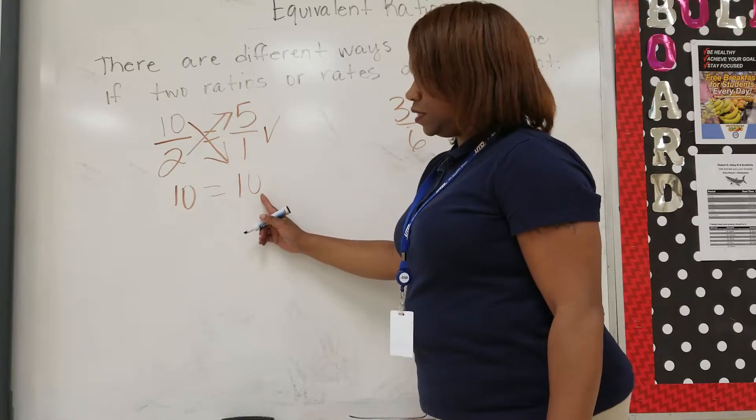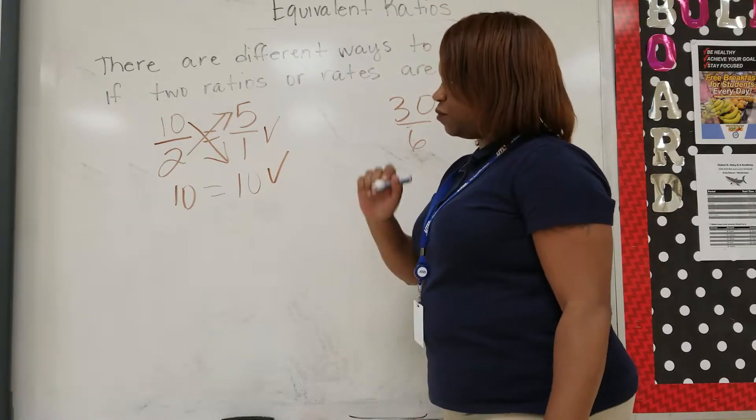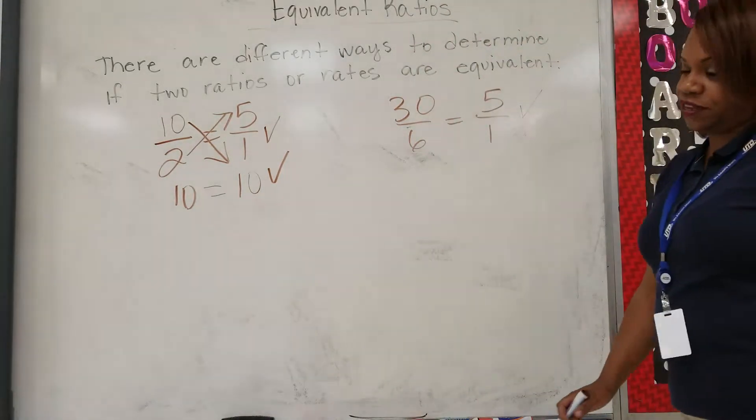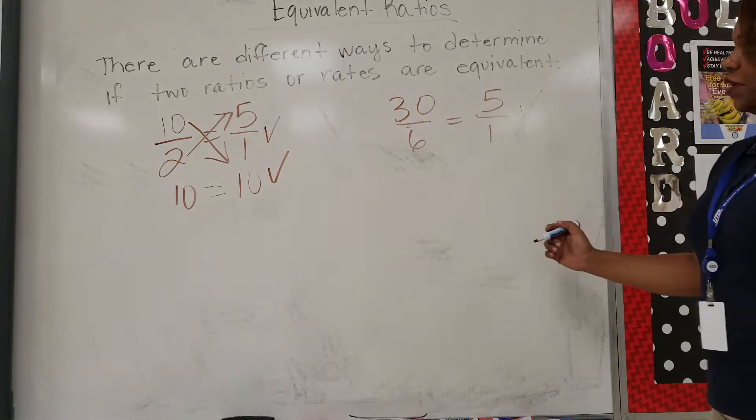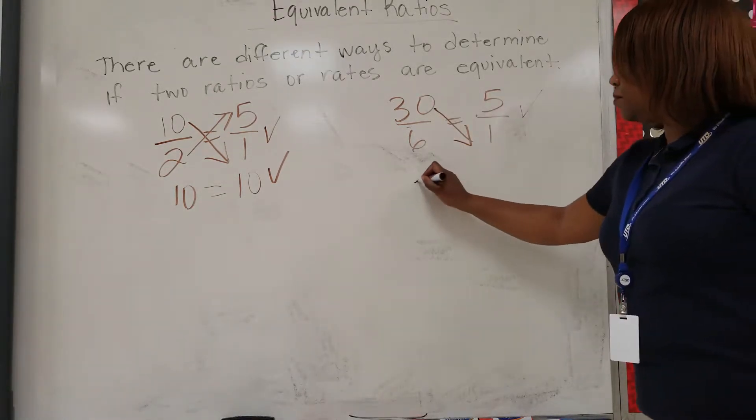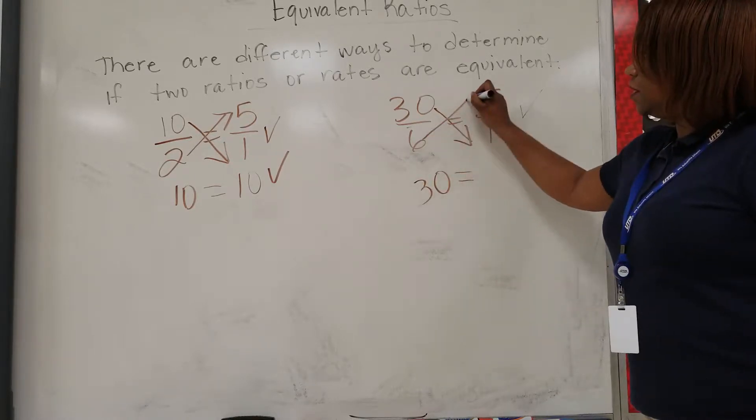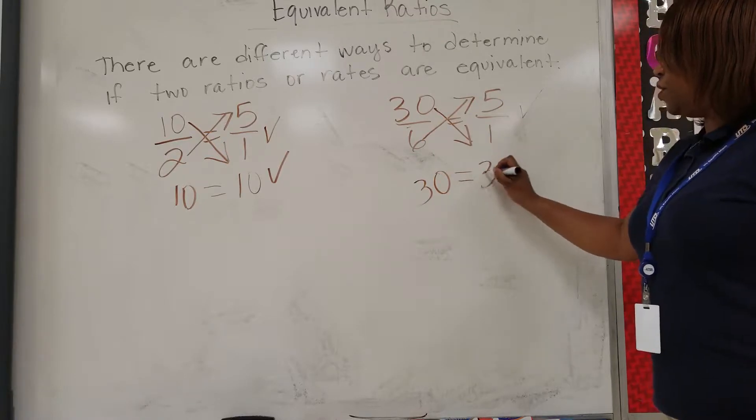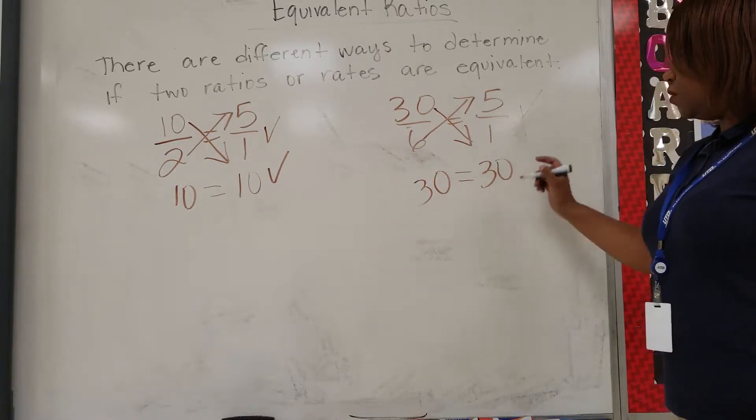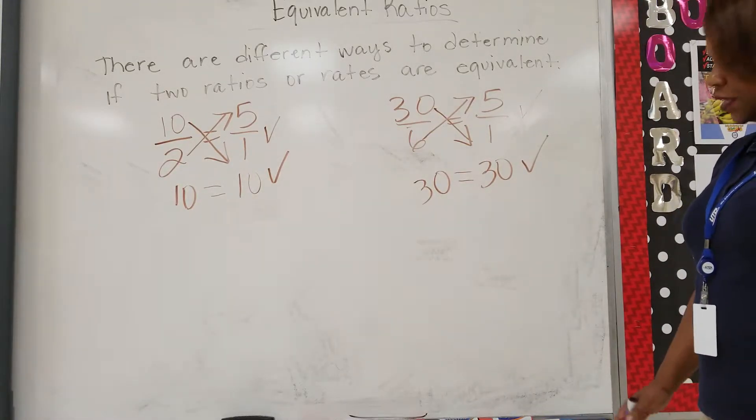10 equals 10, and they are equivalent. So that is another way you can find out if they are equivalent. We'll do it over here. Cross multiply 30 to 1—30 times 1—which will give you 30. 6 times 5 will give you 30, and 30 does equal 30, so yes they are equivalent.